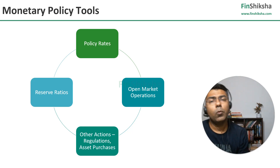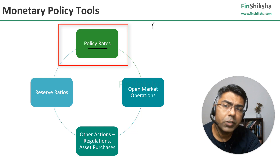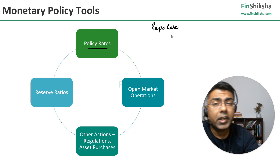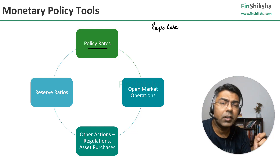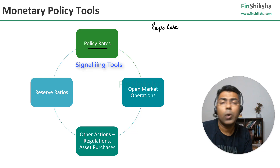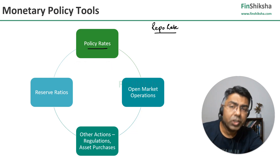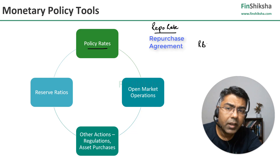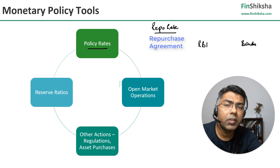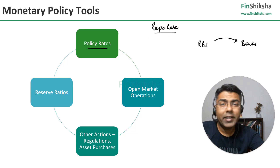Most of the time, what RBI uses is what is called the policy rates — the repo rate. Policy rates are usually signaling mechanisms by the central bank to banks in the economy that they want rates to go up or go down. The term repo rate stands for repurchase agreement. RBI essentially gives money to banks for a shorter period at this repo rate, but the money is not given as direct cash — the bank actually sells bonds or securities to the RBI.